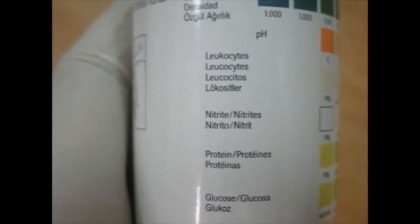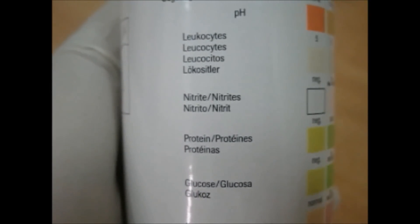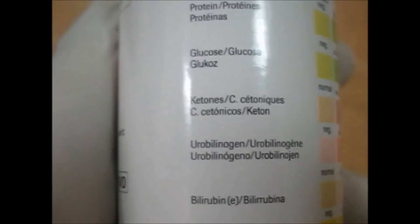The third one is the leukocyte, then the nitrites, then the protein. You can see the different values. Below the protein is the glucose, and below the glucose level you see the ketone, and below that you see the urobilinogen.